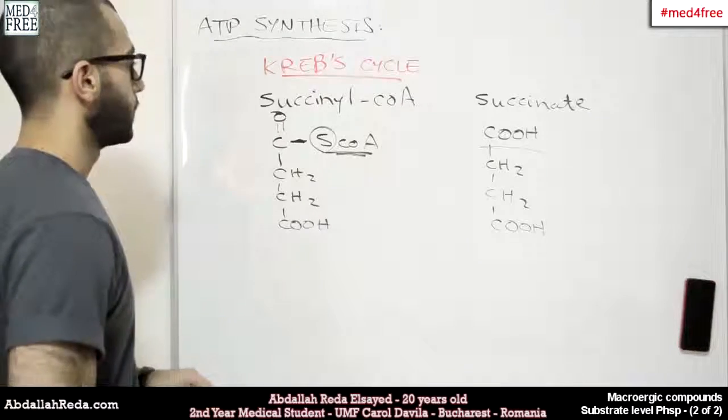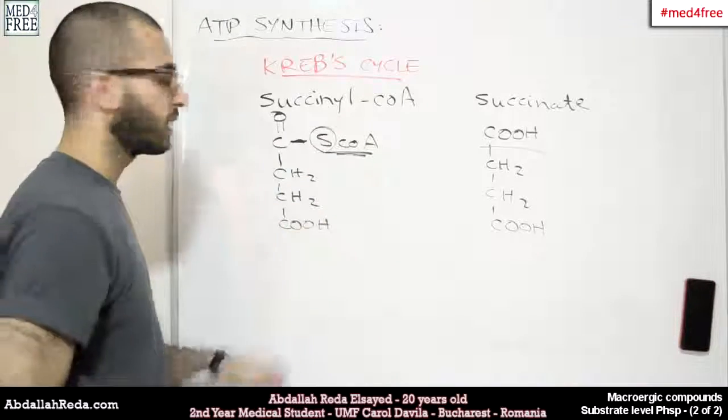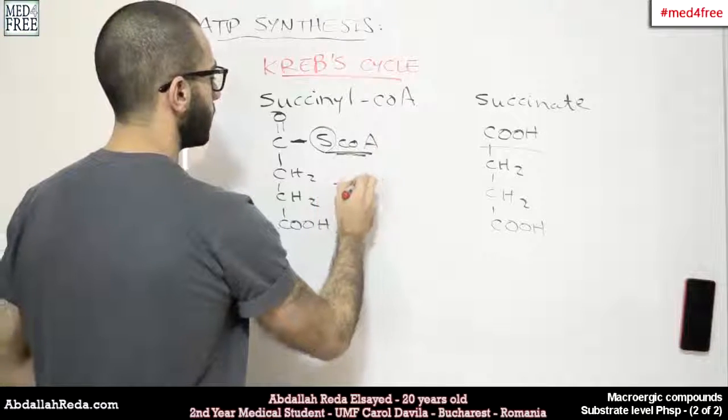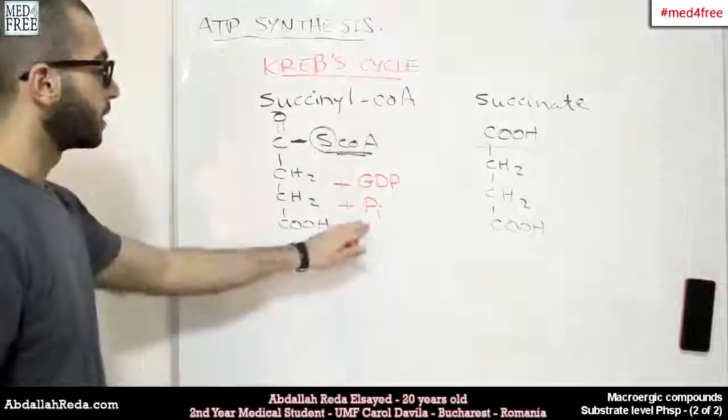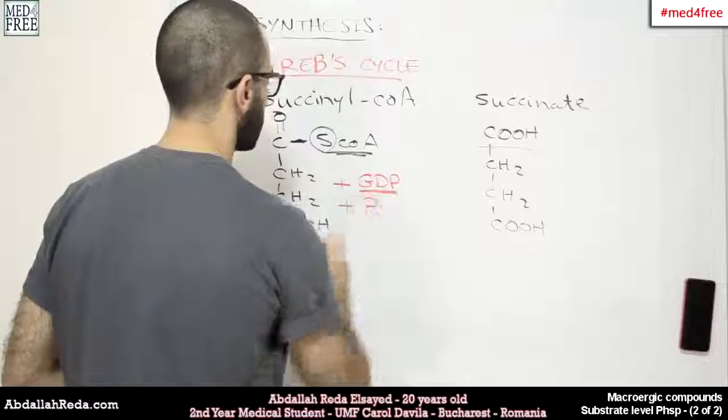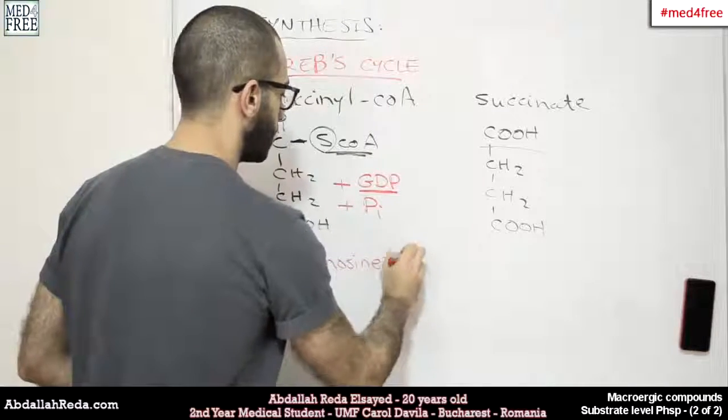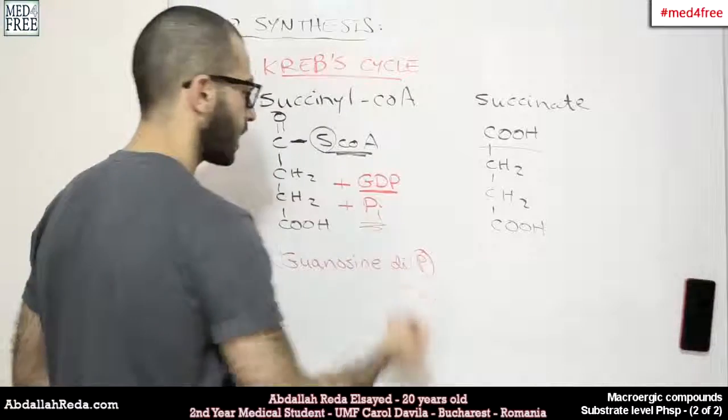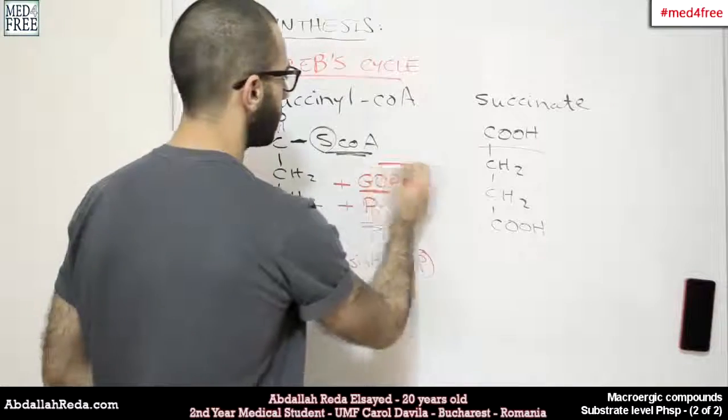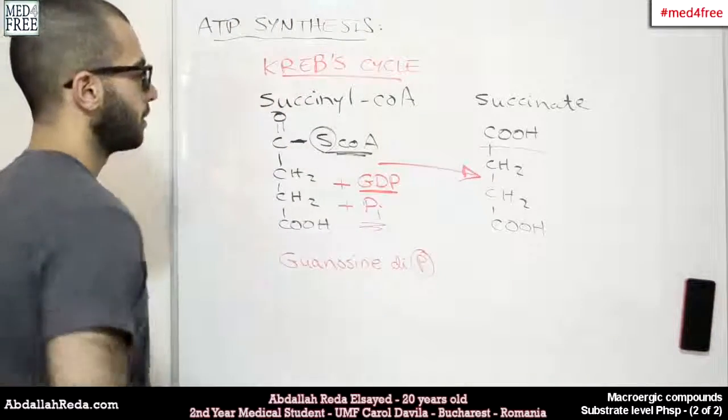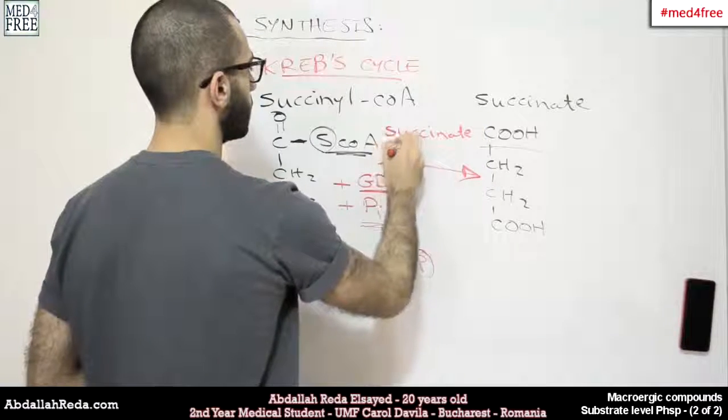How does this reaction produce ATP? Among the inputs of this reaction, we have a GDP molecule plus a phosphoric acid group. GDP is called guanosine diphosphate, just like adenosine diphosphate. It needs an extra phosphoric acid group in order to become GTP. The reaction happens, and the enzyme is called succinyl-CoA synthetase.